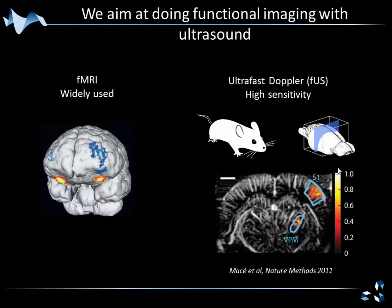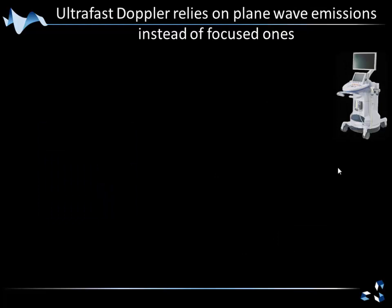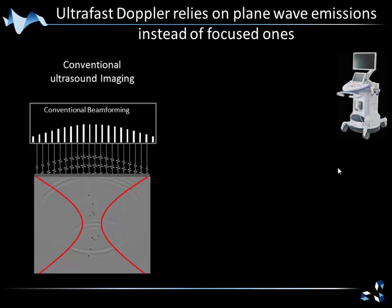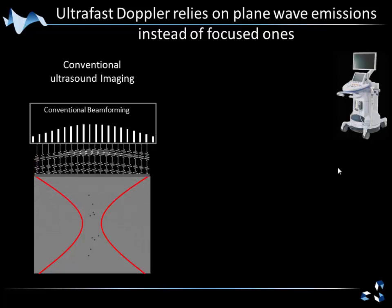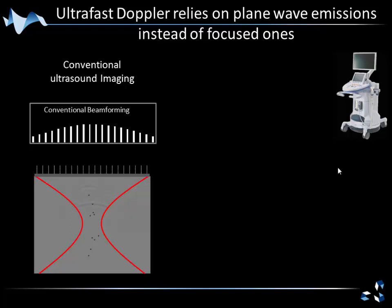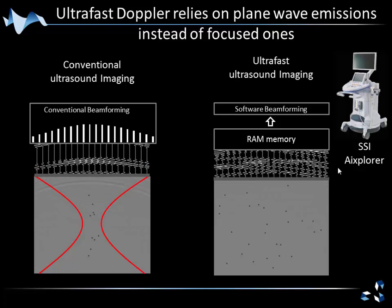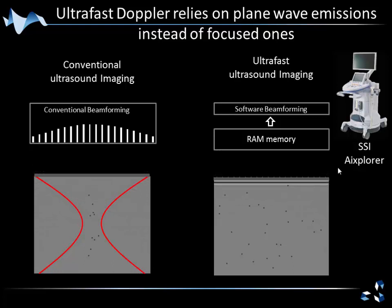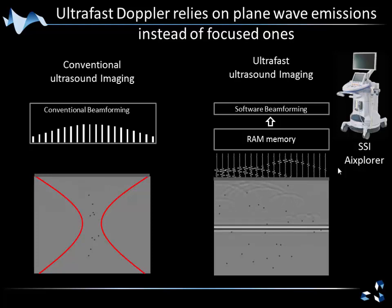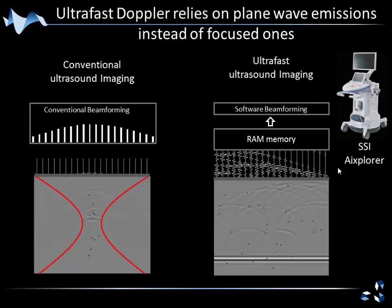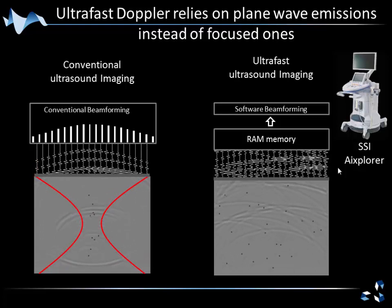This is what I'm going to talk about with this special filter. To explain the difference between ultra-fast Doppler and conventional Doppler: in conventional Doppler, you send a focused wave inside the medium and build the image line by line, requiring about 100 emission-reception processes to build a complete image. Whereas in ultra-fast ultrasound imaging, you send a plane wave, record all echoes at once, and build images continuously. The gain in speed is more or less a factor of 100.